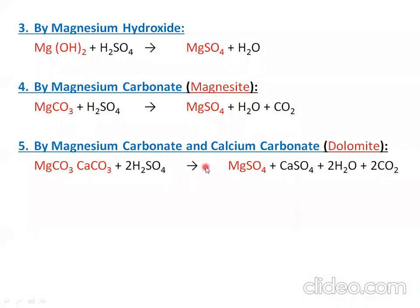A chemical with the common name dolomite is a combination of magnesium carbonate and calcium carbonate. Magnesium hydroxide has the common name milk of magnesia. Dolomite is magnesium carbonate plus calcium carbonate.